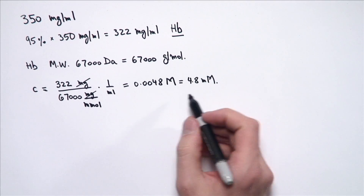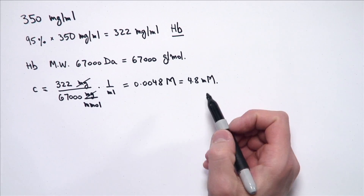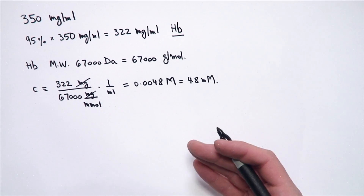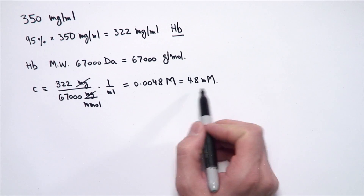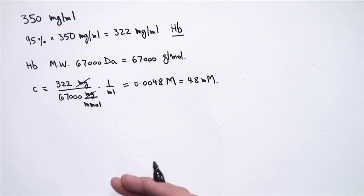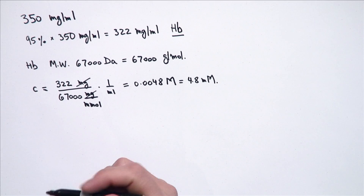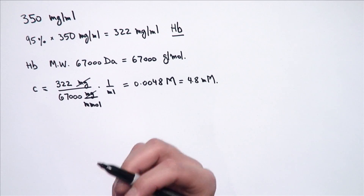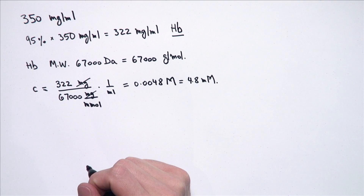Now, this is a pretty important range to keep in mind, because the most abundant proteins such as hemoglobin are going to be in the low millimolar range. Most of the other proteins are going to be in the micromolar range in a cell. Now let's calculate how many molecules of hemoglobin we have in a red blood cell.